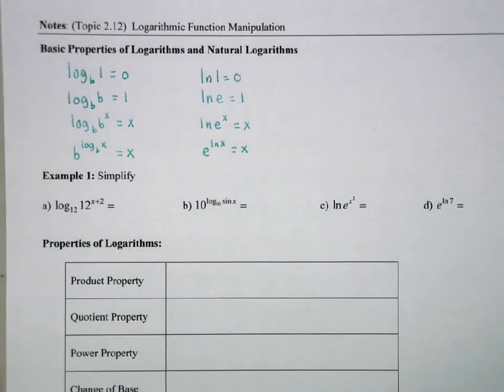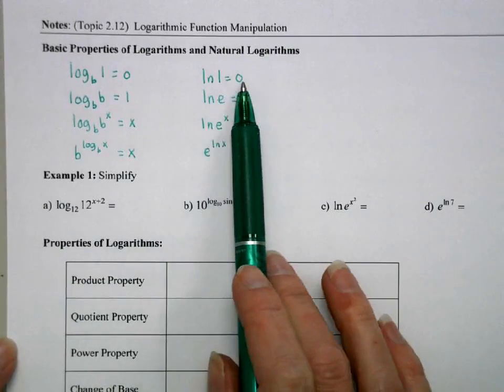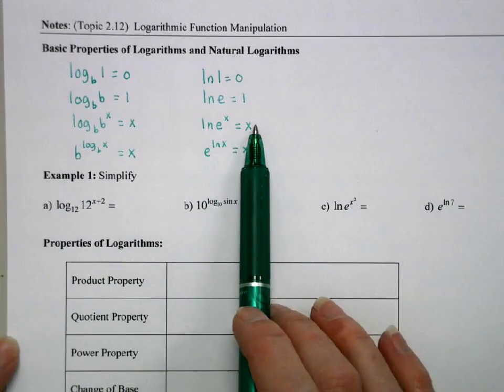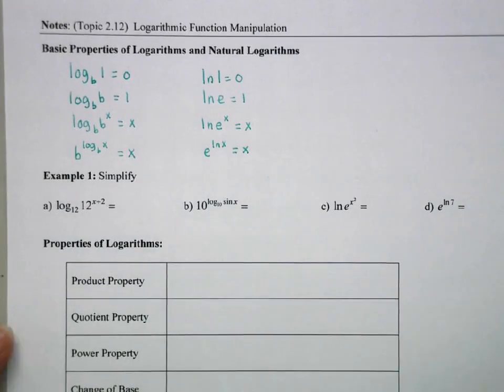but natural log is one that we use quite a bit. So natural log of 1 is 0, natural log of e is 1, natural log of e to the x is just x, and e to the natural log of x is also x.